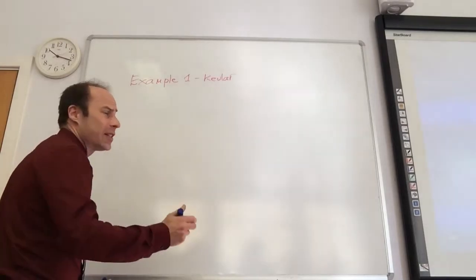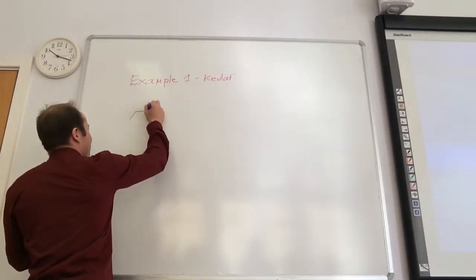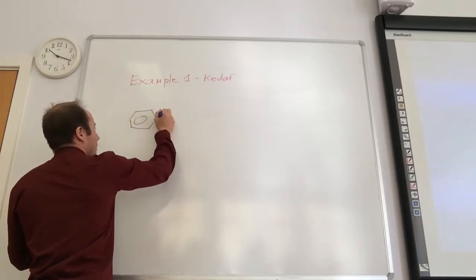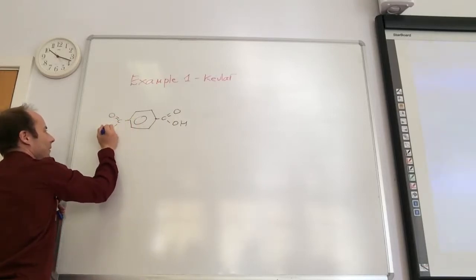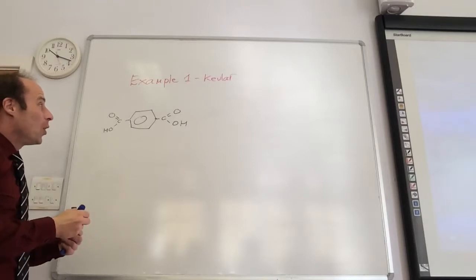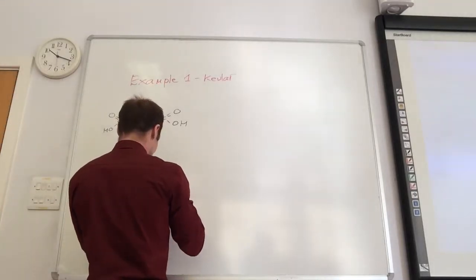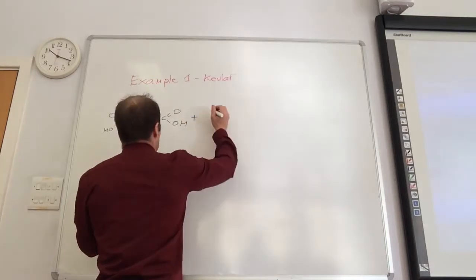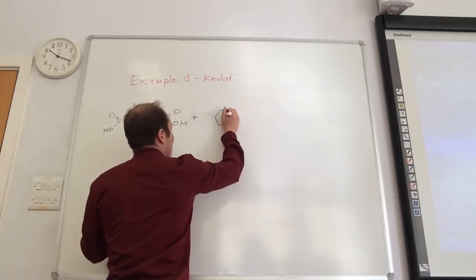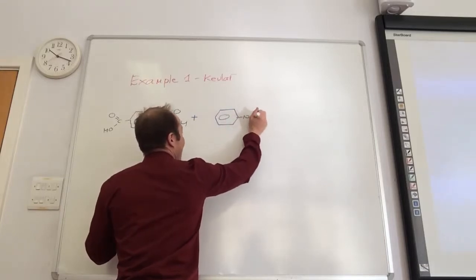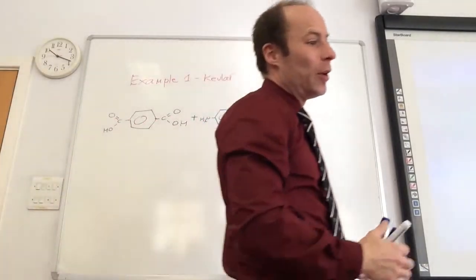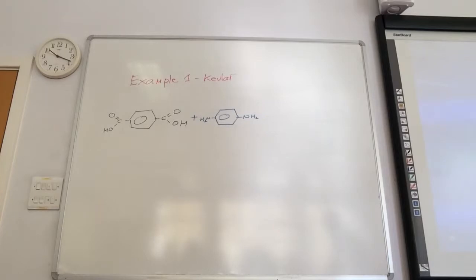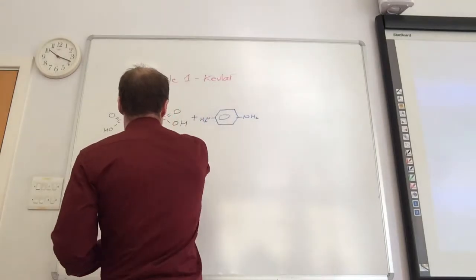Here we go. We're going to start with a diacarboxylic acid. It's a benzene ring with a diacarboxylic acid. And we're also going to add to that a benzene ring which is now a diamine. So you've got two of those. Let's do a couple more, shall we? Let's do another one of these.